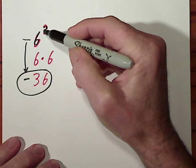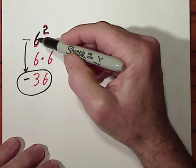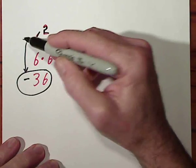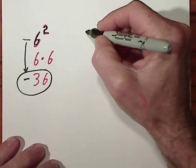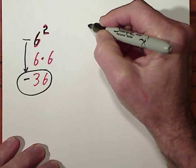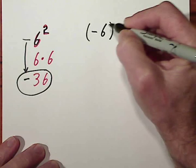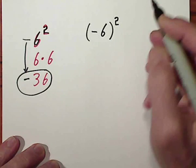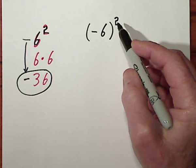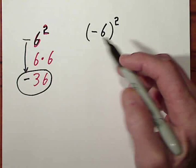If I want this exponent to apply to the 6 as well as the negative sign, in math, we have grouping symbols. Now the exponent applies to the parentheses.